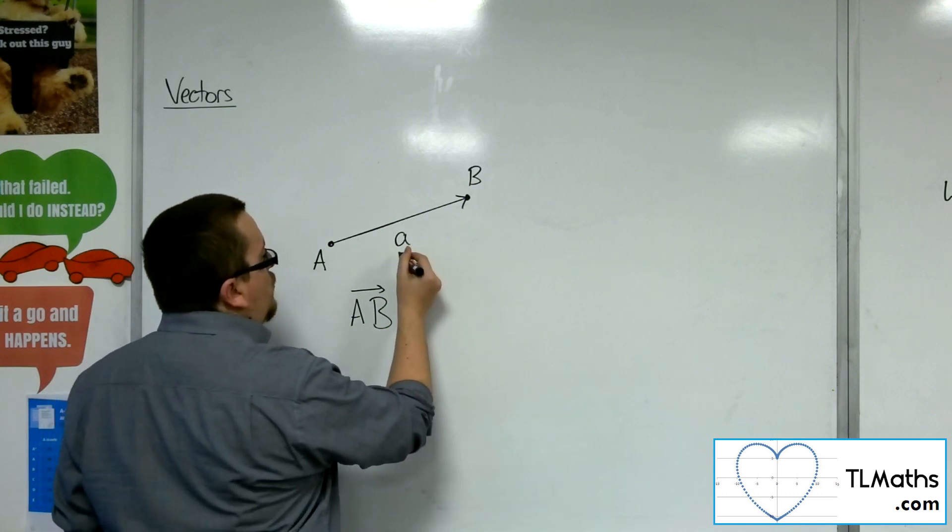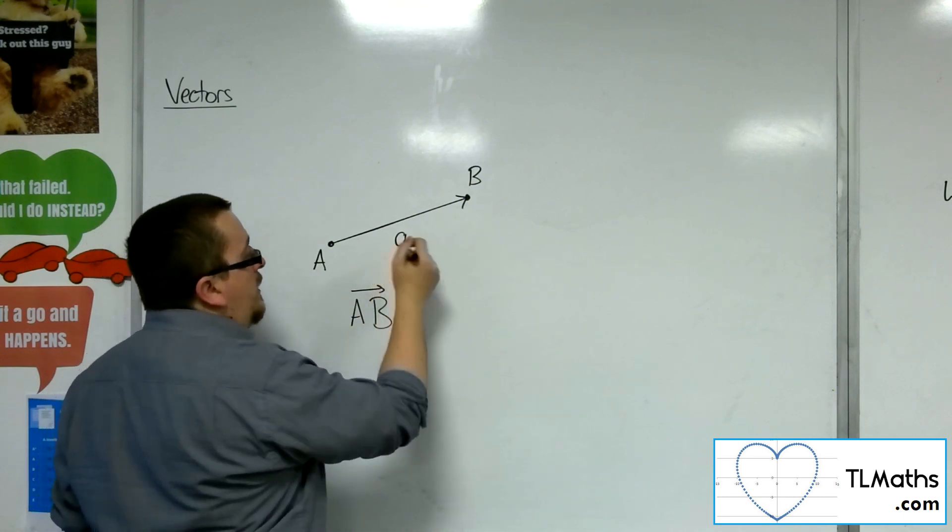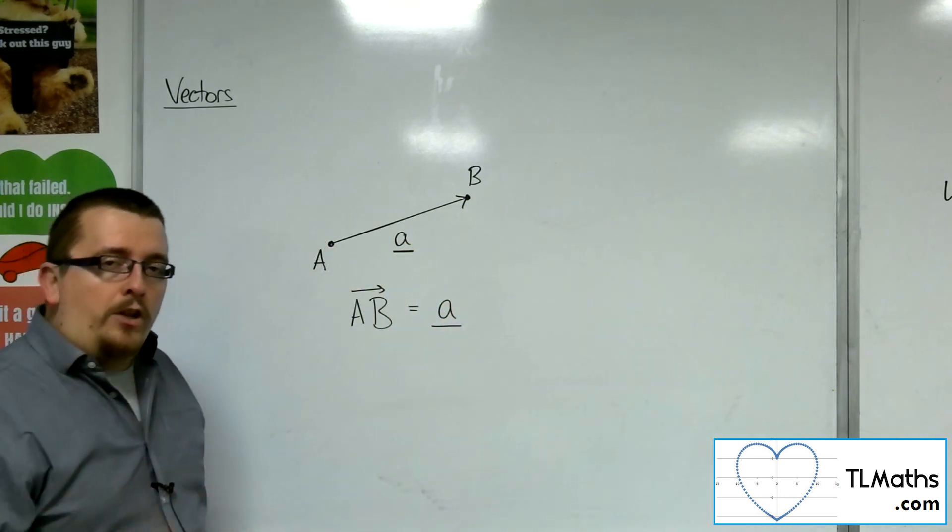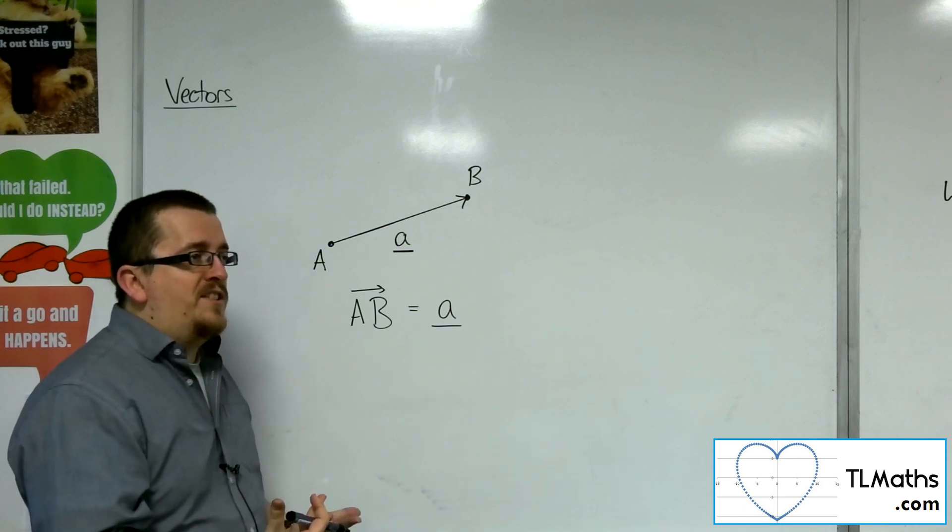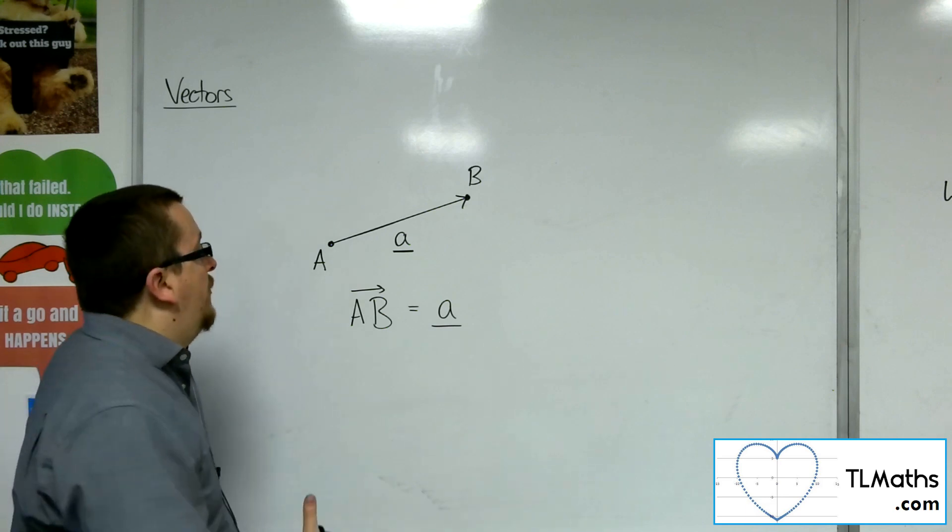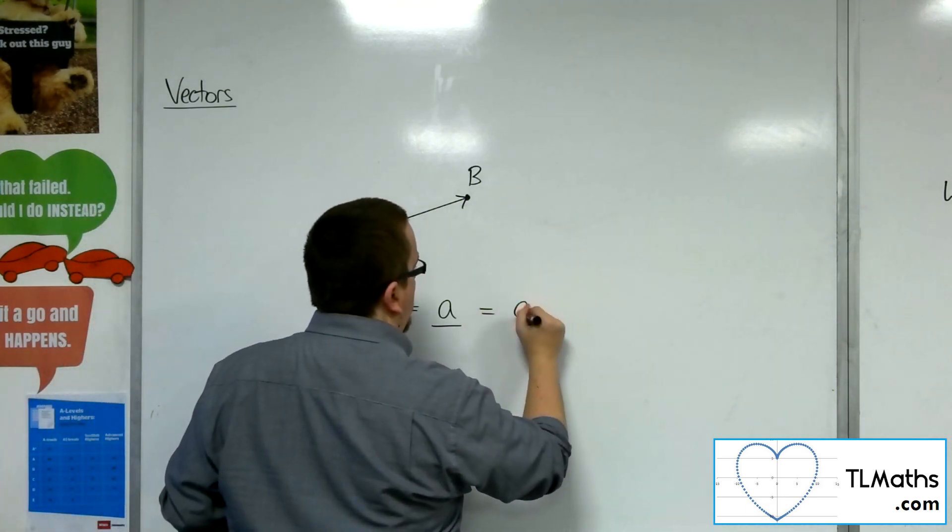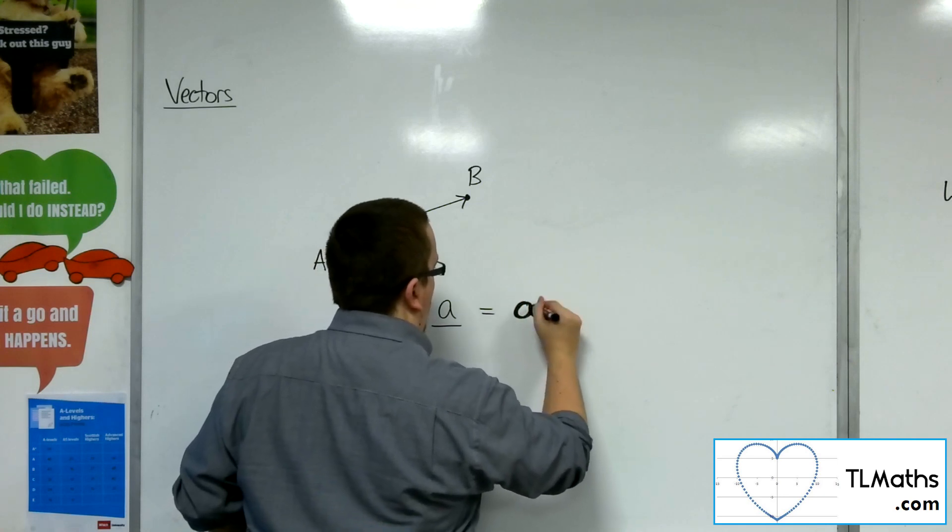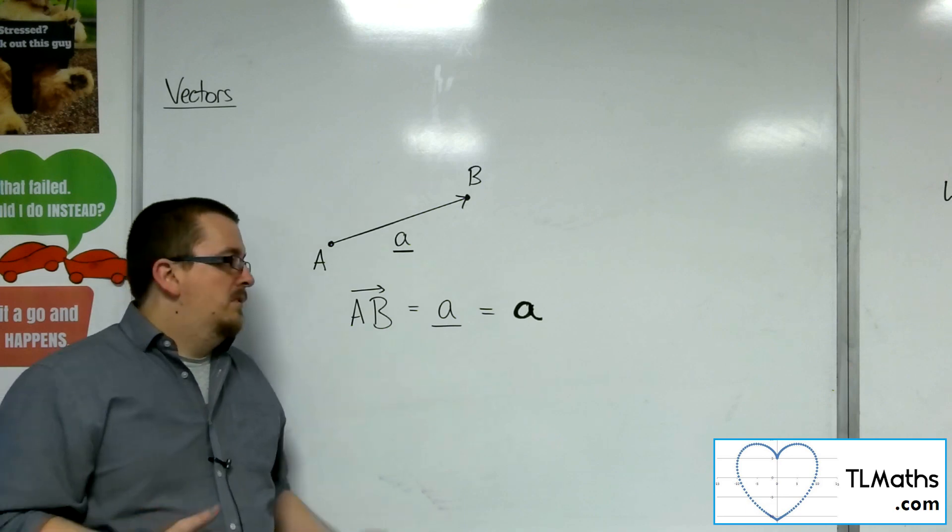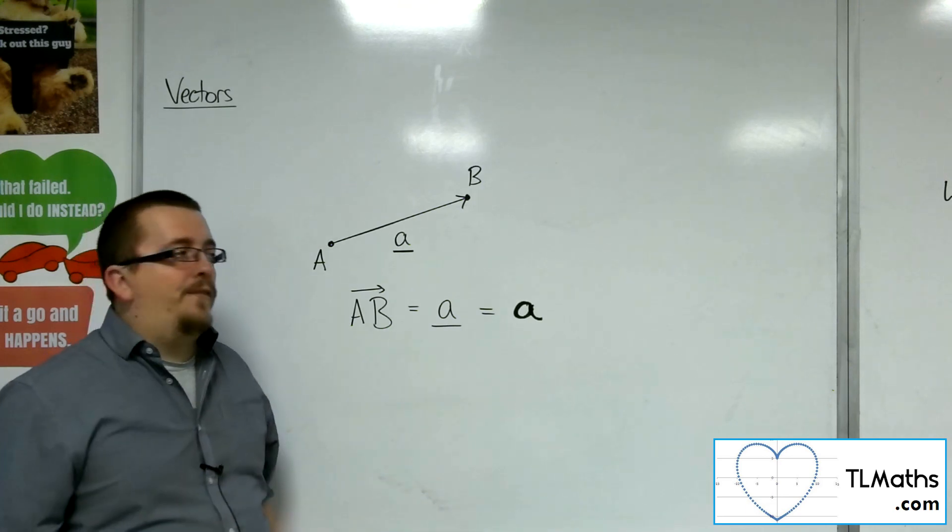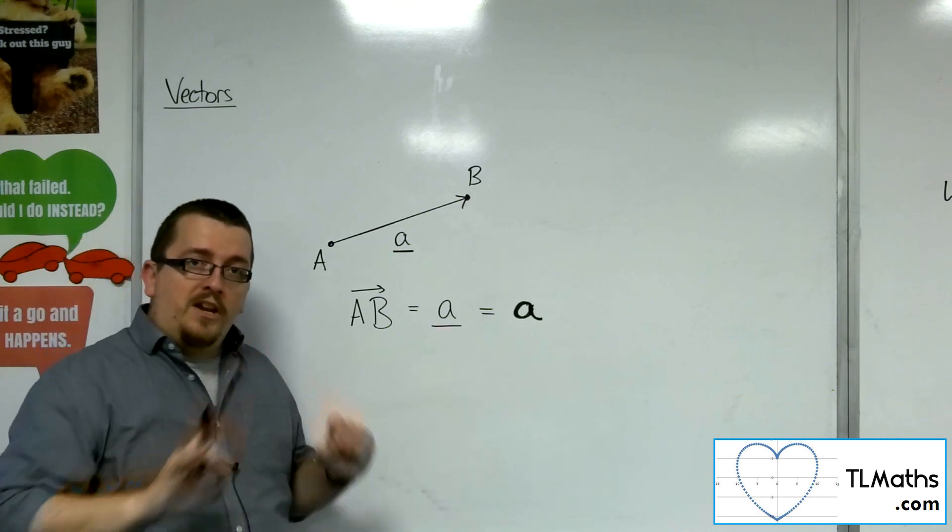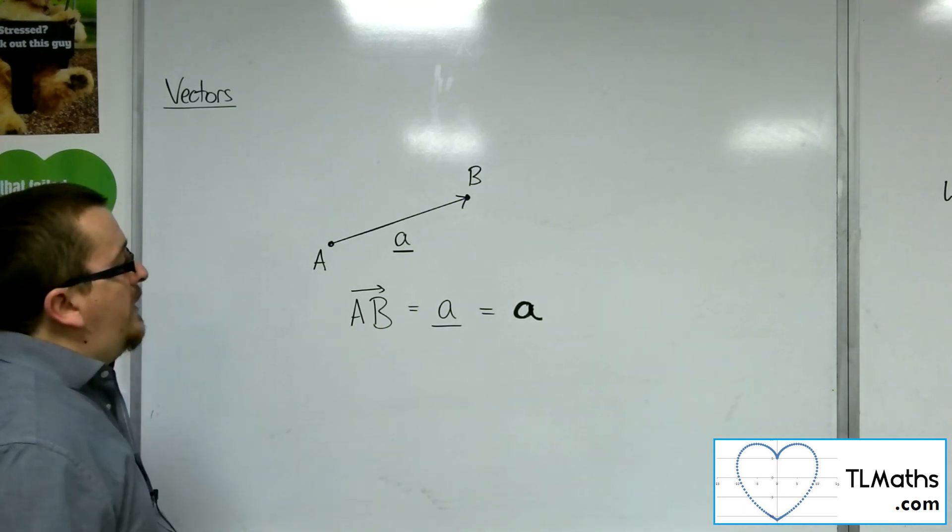So in order to make sure that we identify this as a vector, we can underline it. So we can underline the A. Now, the reason why when we're writing vectors down that we underline them is because we cannot write in bold. In books, they will write this in bold, but for us mere mortals, writing in bold is quite a challenging thing to do, especially if we've got lots of vectors going on. So we avoid that by drawing in an underline. So all of these three things could mean the same thing.